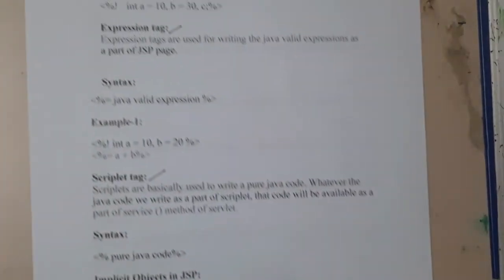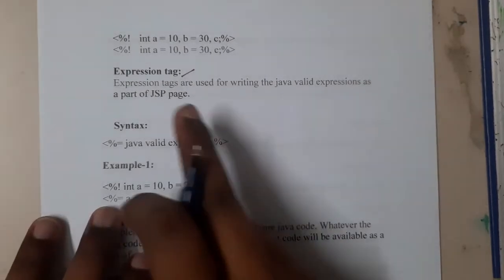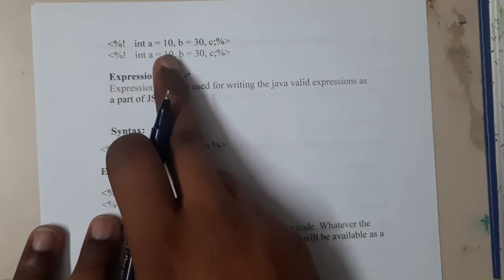If you want a small example, this will be the example. The example is clearly visible: less than percentage exclamatory mark, int a equal to 10, b equal to 30, and closing it. This is nothing but declaration.